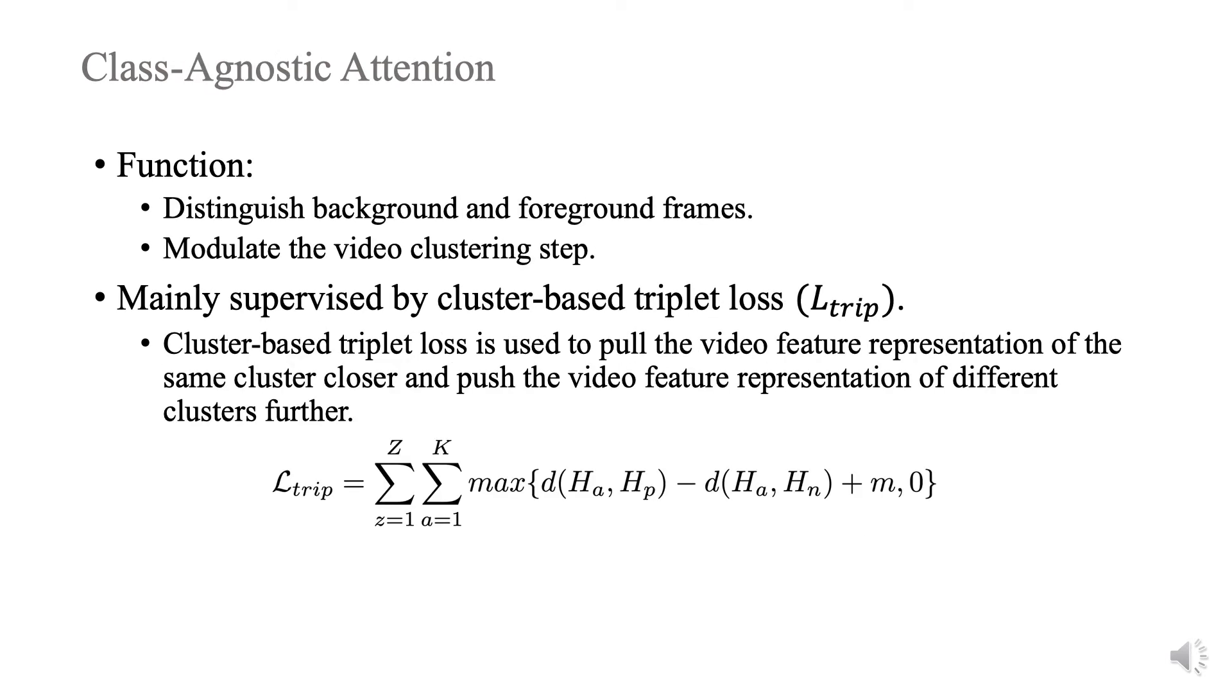Since untrimmed videos usually contain irrelevant backgrounds, we design class-agnostic temporal attention model. To pull the feature representation of the same cluster closer and push the video features belonging to different clusters further in the feature space, we design cluster-based triplet loss to train the class-agnostic attention model.